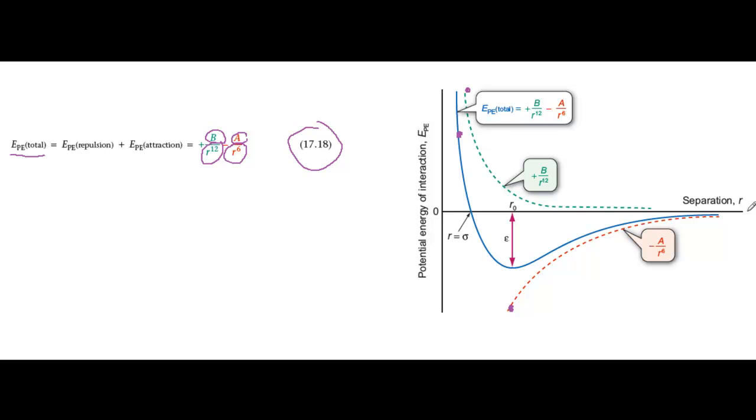Now imagine that we're starting with the molecules widely separated. The attractive forces dominate, and as the molecules move closer together, the total potential energy becomes more negative. The point where the energy reaches a minimum corresponds to the equilibrium separation, and we call that R0.